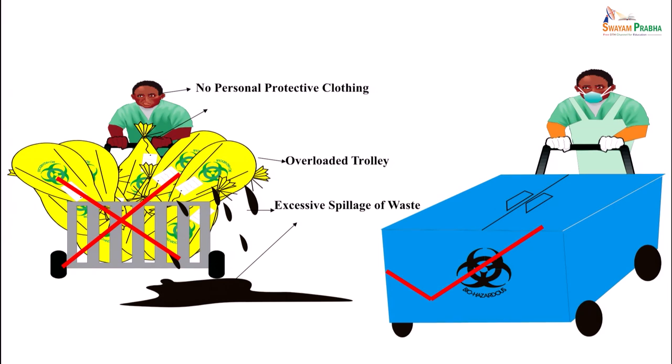Two pictures are shown: one showing how waste should be handled — covered with a biohazard label and the carrier is protected — and the other showing incorrect practice where the carrier is unprotected and the trolley is overloaded, with risk of spillage, which must be avoided.